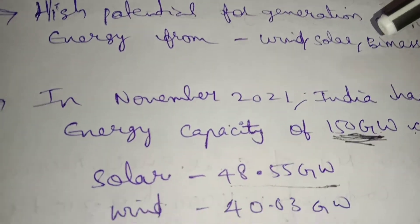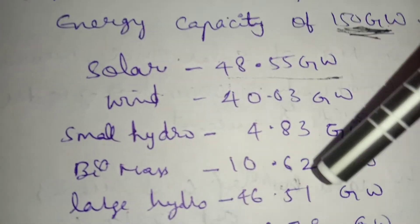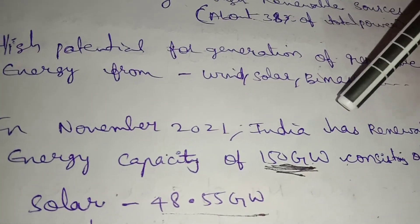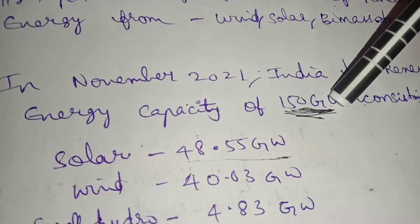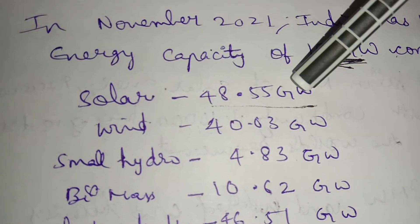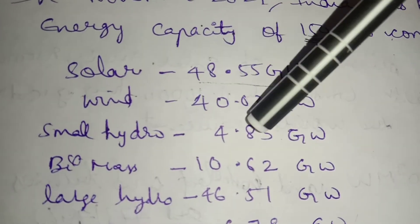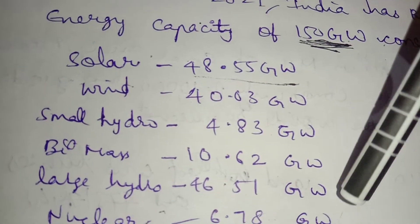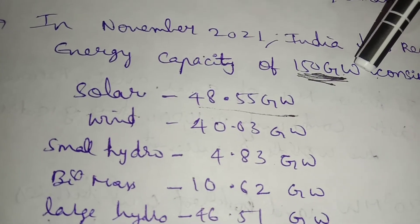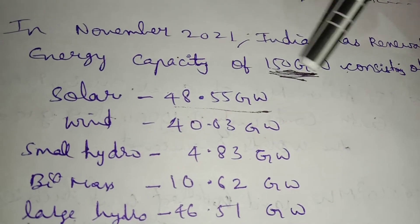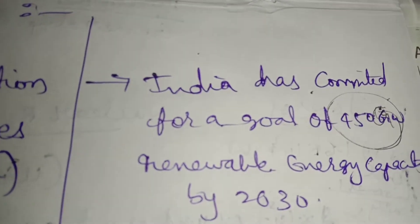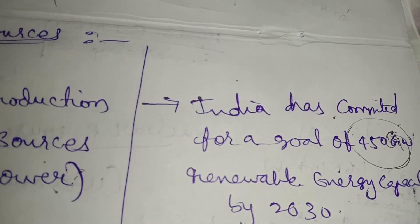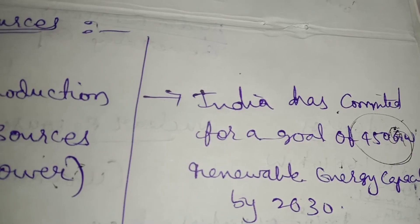Sources include wind energy, solar energy, biomass and small hydro, large hydro, and nuclear. In November 2021, India had a renewable energy capacity of 150 GW, consisting of solar power 48.55 GW, wind 40.03 GW, small hydro 4.83 GW, biomass 10.62 GW, large hydro 46.51 GW, and nuclear 6.78 GW. India has committed to a goal of 450 GW of renewable energy capacity by 2030.